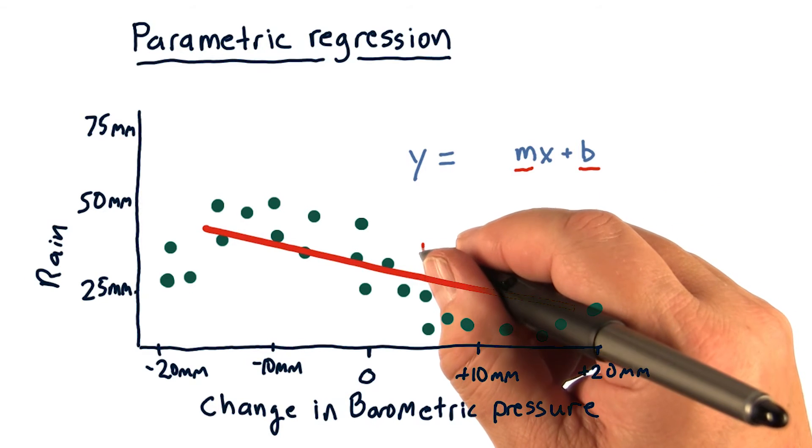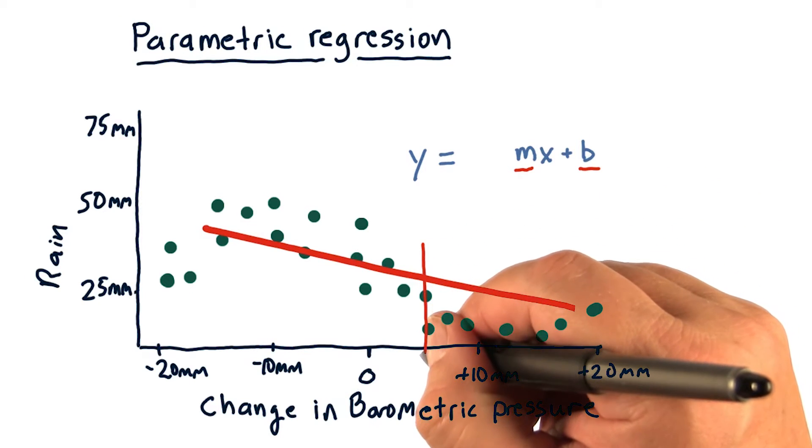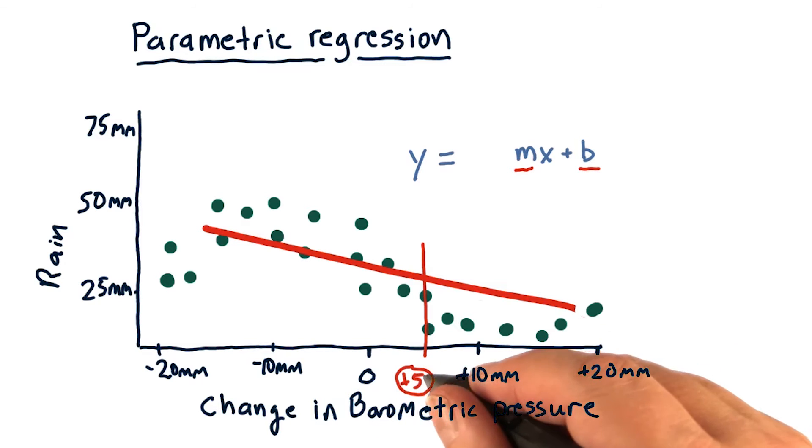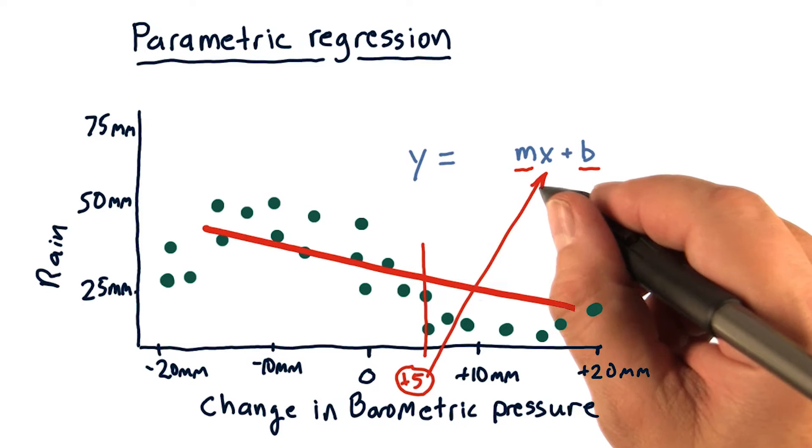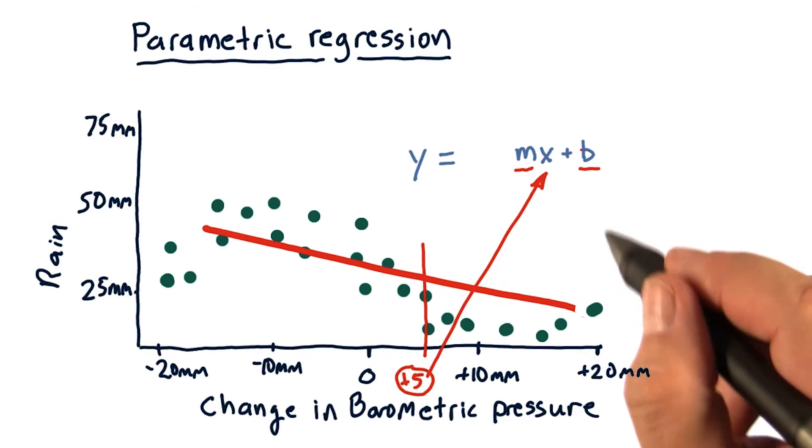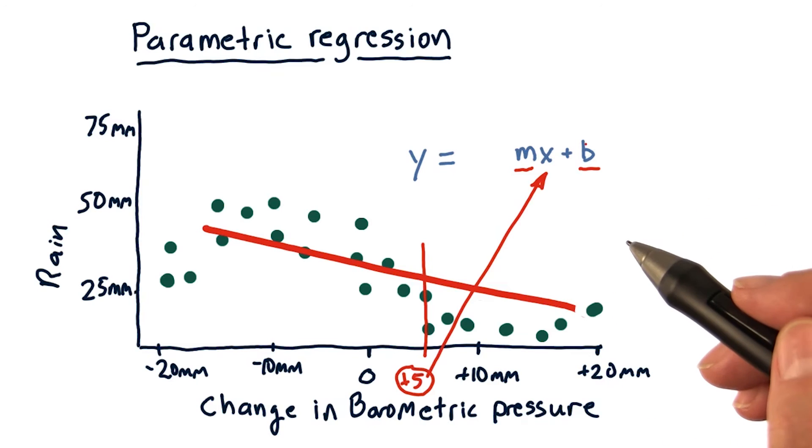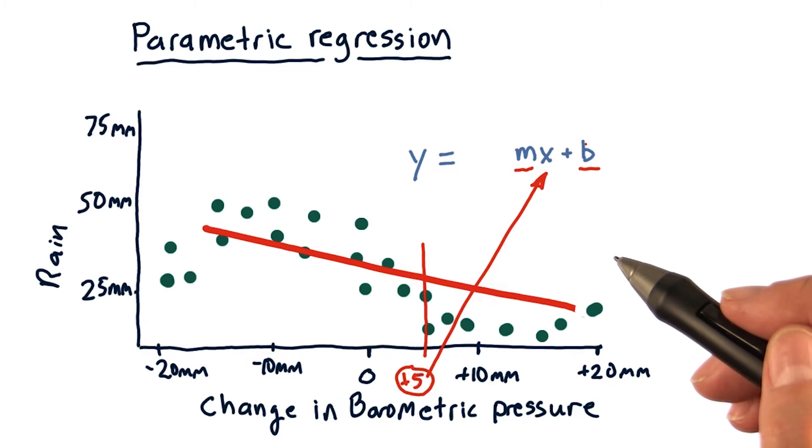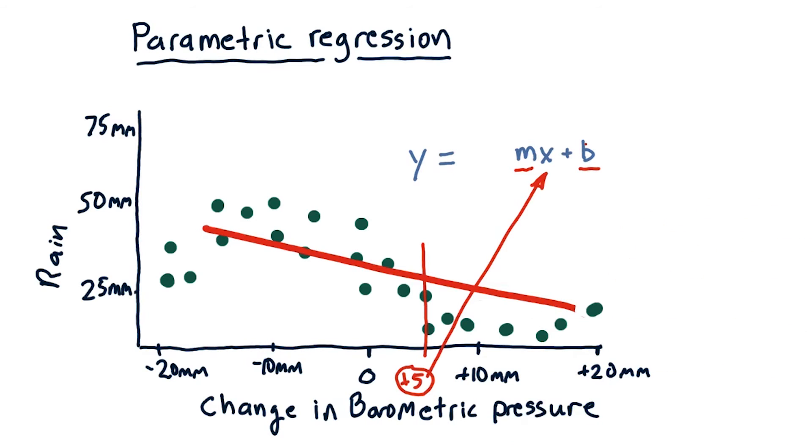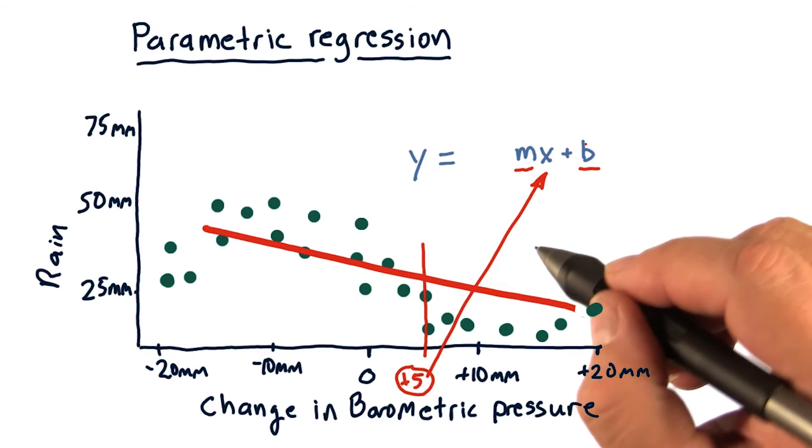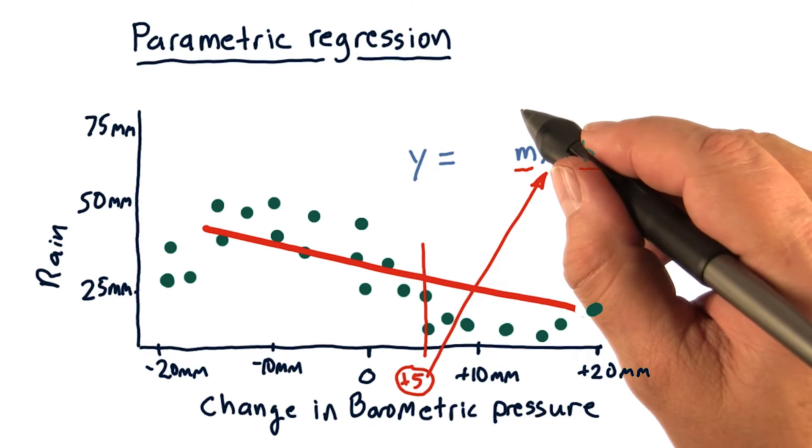Let's say the barometric pressure today increased by five. We would then plug that five into our model here and multiply it by m and add b. That's our estimate for that day of how much it's going to rain. The linear regression approach is how we arrive at m and b.